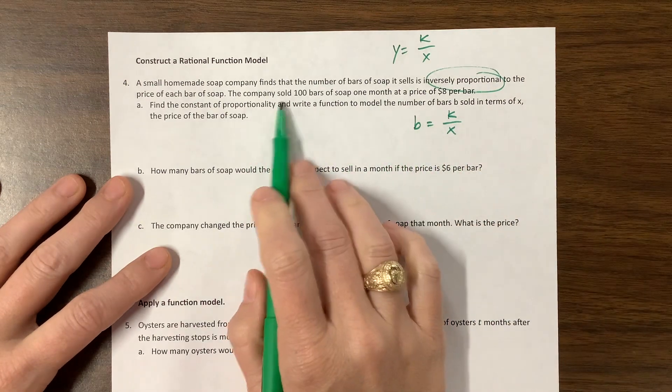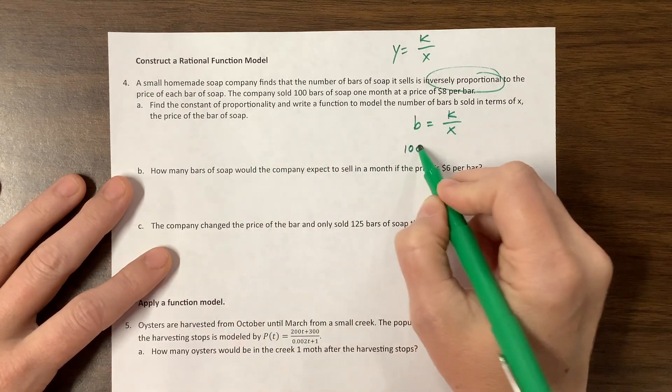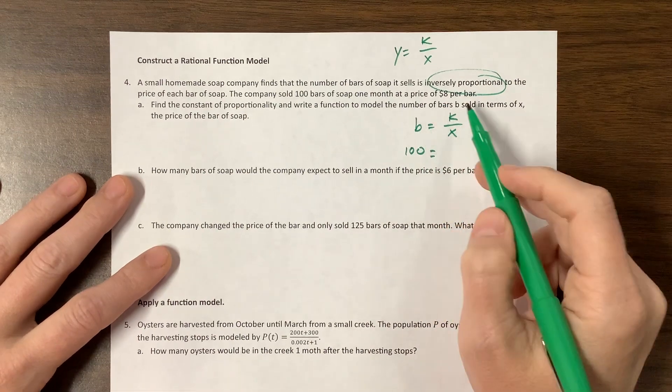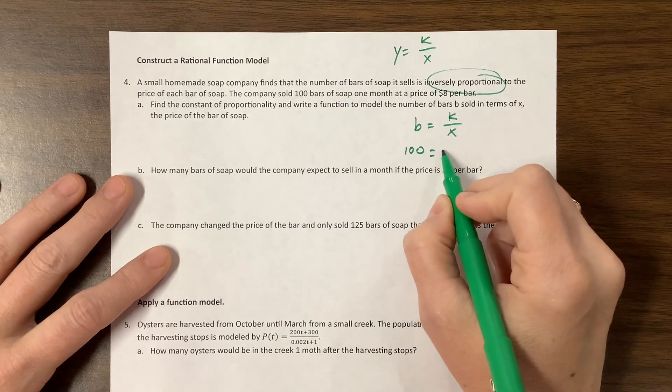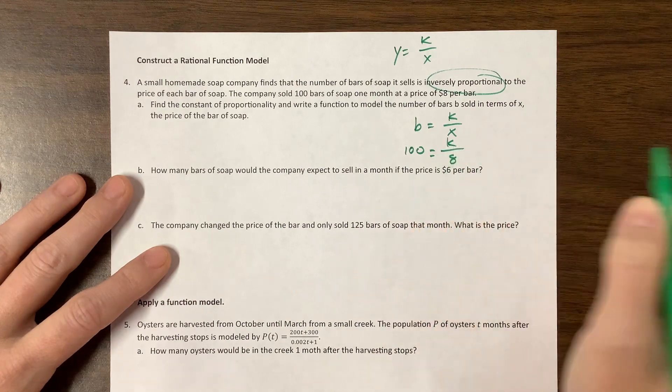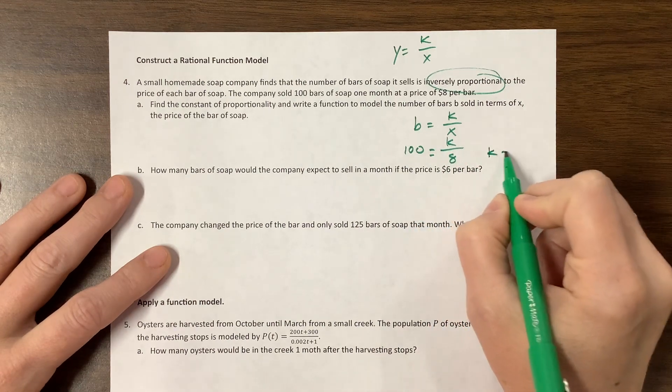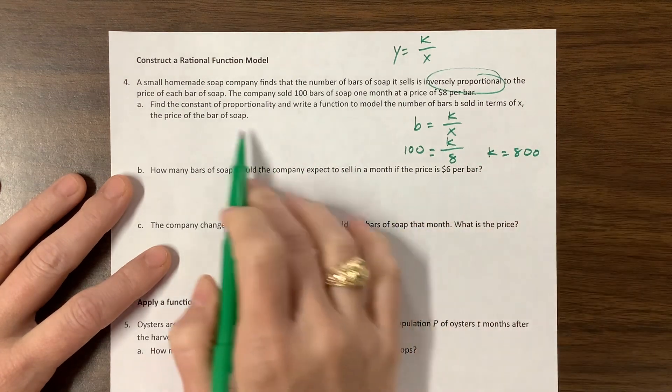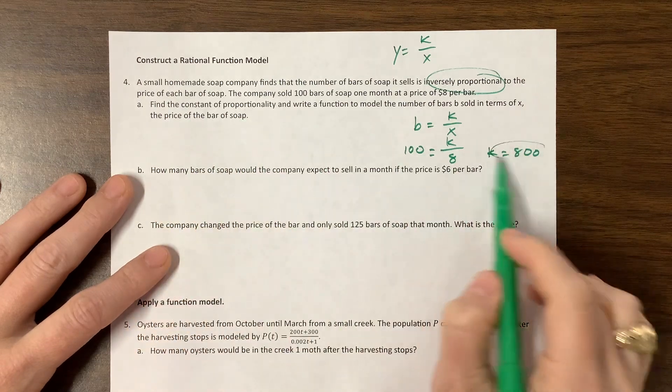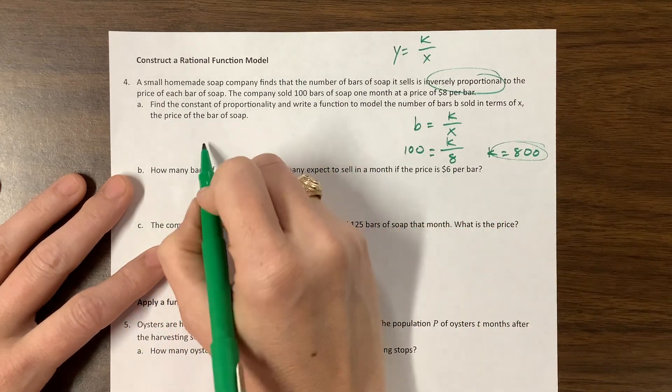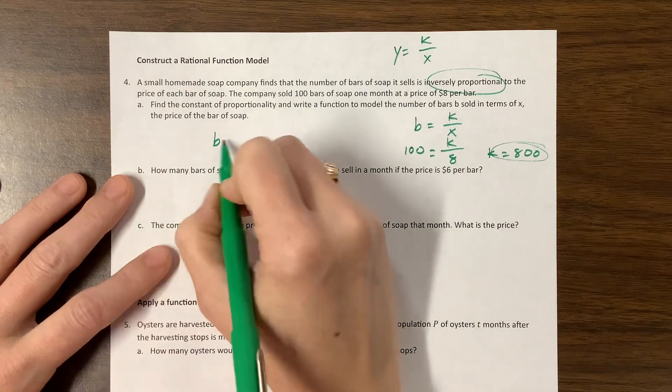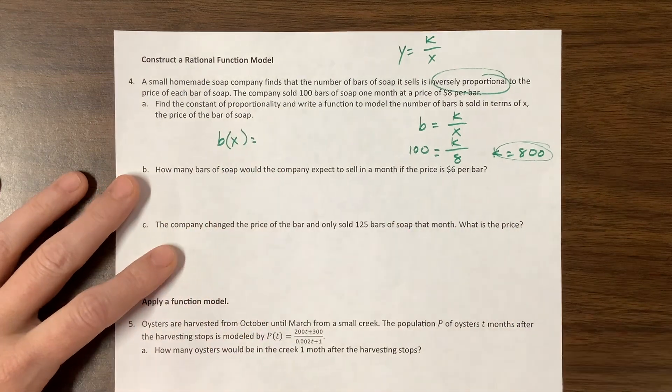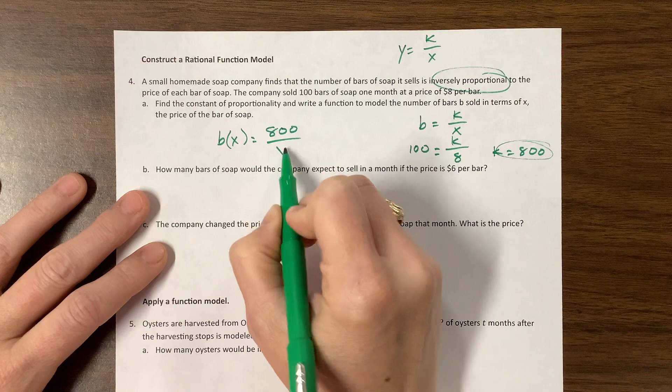So they're telling us now that the company sold 100 bars at a price of 8. So we're looking for k. So this k value will be equal to 800. So the function would be, we could say b of x if we really want to, is equal to 800 over x.